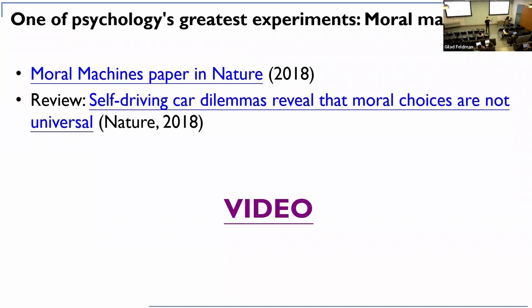How many of you think people should be in charge? Some of you. How about technology — self-driving autonomous vehicles? None of you. The logic seems to be about accountability and responsibility — you want to be able to hold somebody accountable. If it's humans who made the decision, we know who to blame. But we don't know who to blame if it's a self-driving autonomous vehicle.